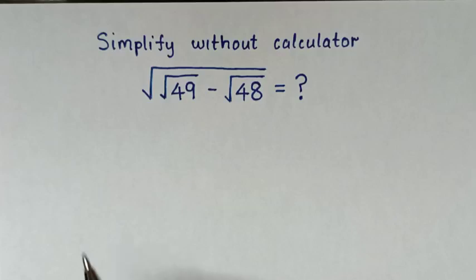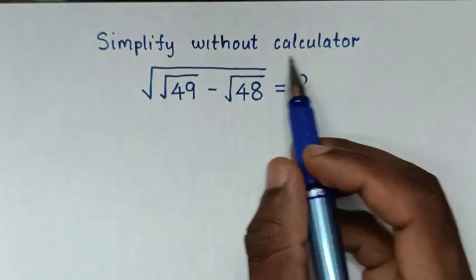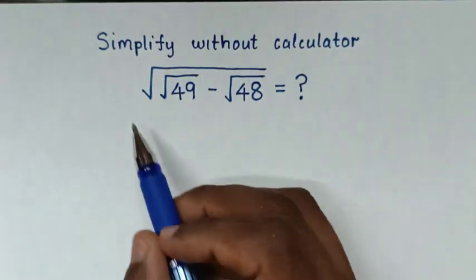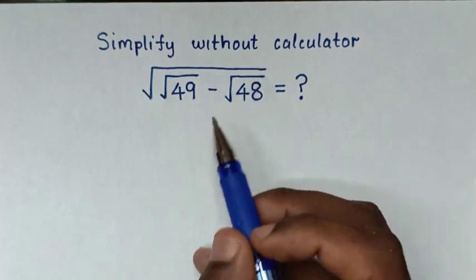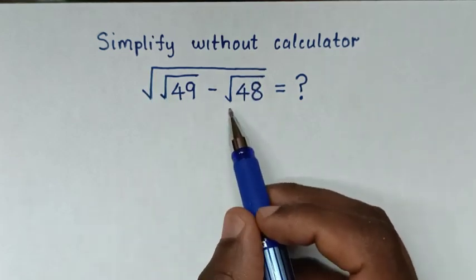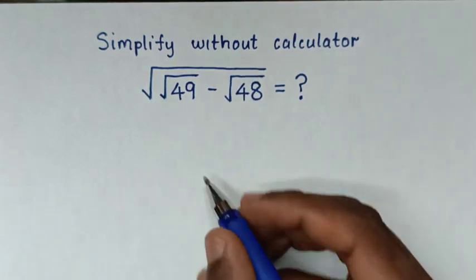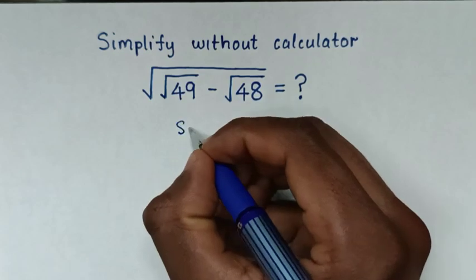Hello. How to simplify without a calculator: square root of (square root of 49 minus square root of 48). Solution.